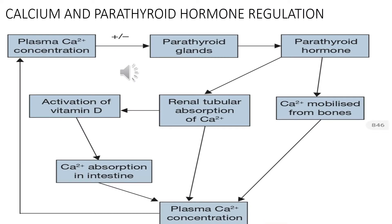Regarding the function of the parathyroid gland, the main action is to release parathyroid hormone, which is released to maintain the level of calcium within the serum. If we have a low level of calcium concentration, the parathyroid gland releases parathyroid hormone, which increases calcium level mobilized from bone, increases renal tubular absorption of calcium, and leads to activation of vitamin D, which increases calcium absorption in the intestine. In all these ways, it leads to an increase in plasma calcium concentration.